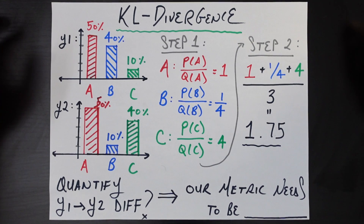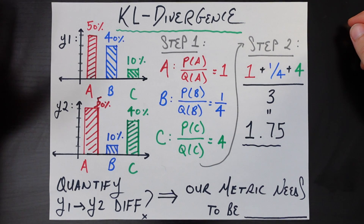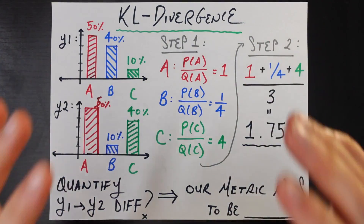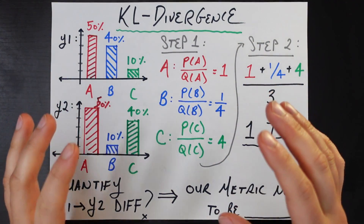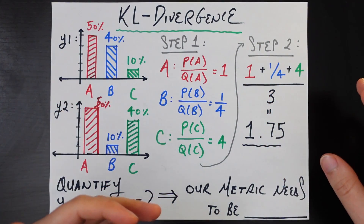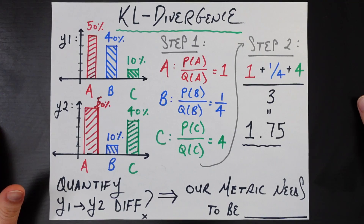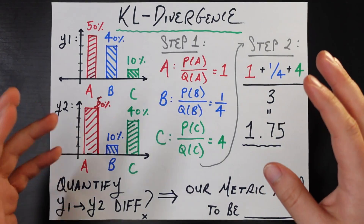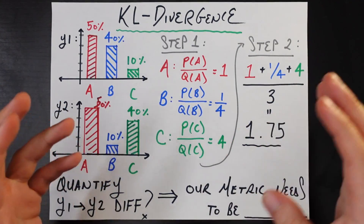Hey everyone, welcome back. Today we're going to be talking about the KL divergence, which is a very popularly used metric in data science in order to measure the difference between two distributions.